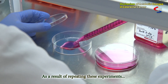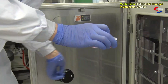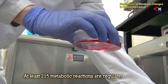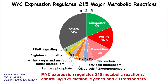As a result of repeating these experiments, it was revealed that at least 215 metabolic reactions were regulated by MYC. In genes responsible for these 215 metabolic reactions, at least more than 160 reactions are controlled — for example, 39 transporters, purine and pyrimidine biosynthetic pathways, one-carbon metabolism, fatty acid metabolism, glycolysis, and gluconeogenesis.